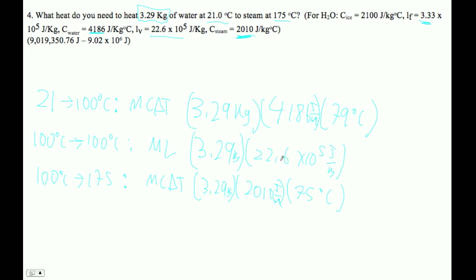This is the one that separates the champions from the chump peons. Okay, so literally what I'm going to do is I'm going to go this plus this plus this equals. I'm going to add all that stuff together. Okay, so let's add this all together. So I'm going to go literally 3.29 times 4186 times 79 plus 3.29 times 22.6E5 plus 3.29 times 2010 times 75.